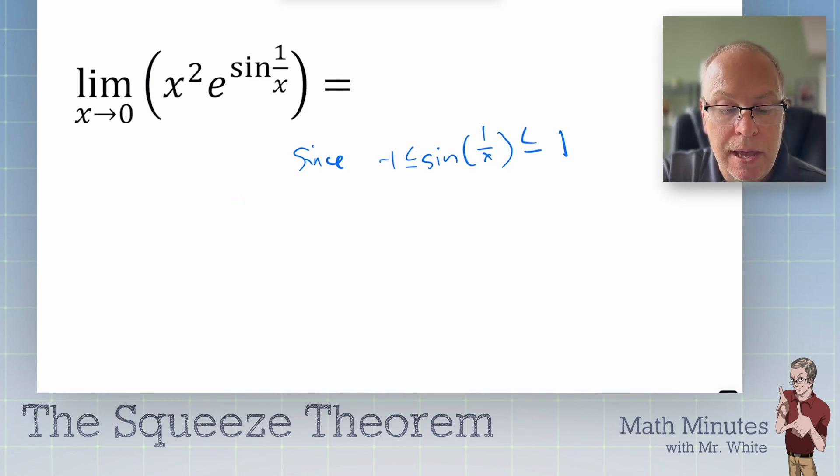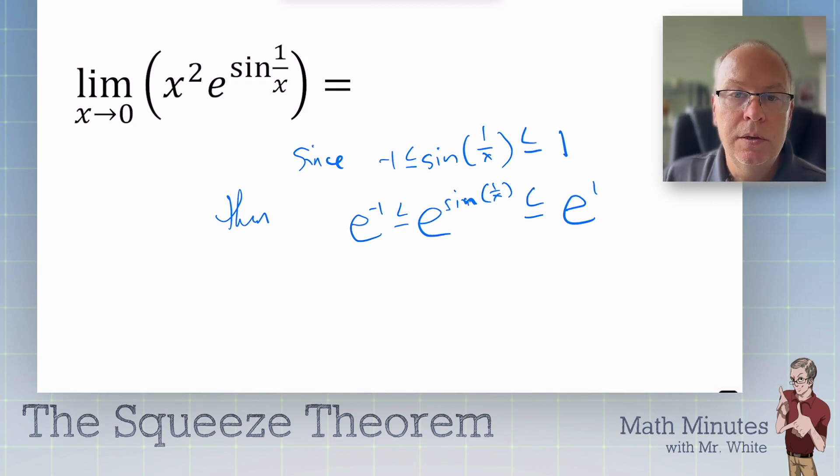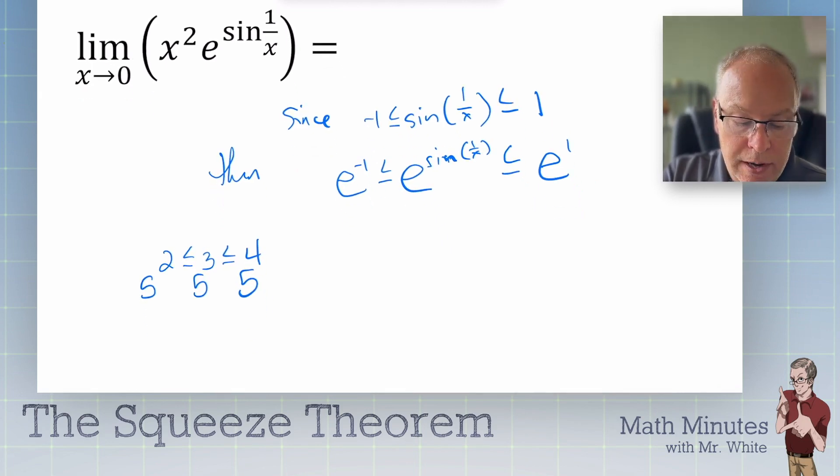Then, e to the negative first would be less than e to the sine of 1 over x, which is less than e to the first. You see what I did? I added a base e to all three sides, and that doesn't mess up the inequality, folks. That is still a true inequality. If I have 2 is less than or equal to 3, which is less than or equal to 4, and then I put a 5 on all of these, you see how 25 is less than 125, which is less than 625. So, you're allowed to add the same base to all sides, and you still have a valid inequality.